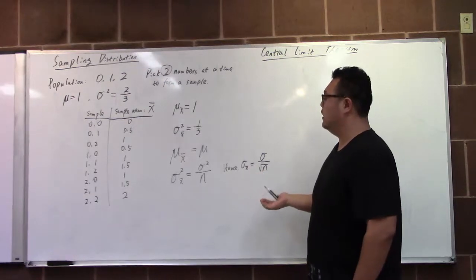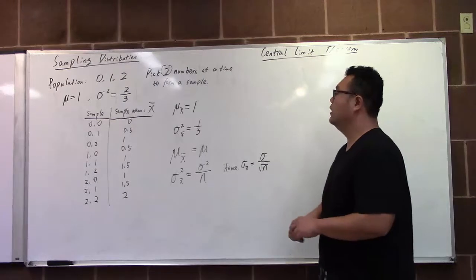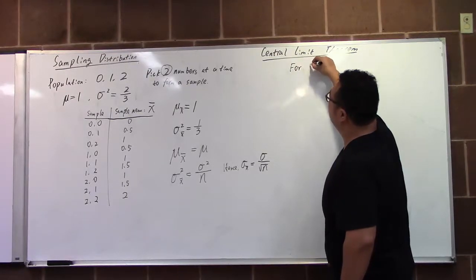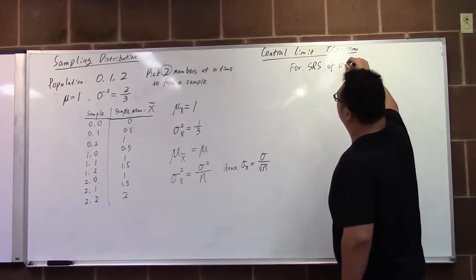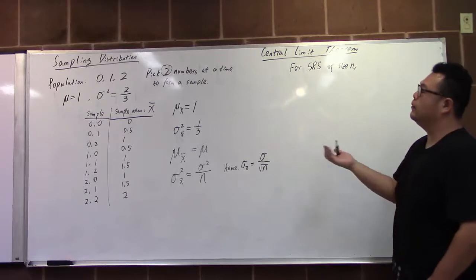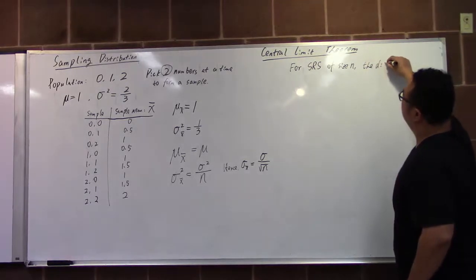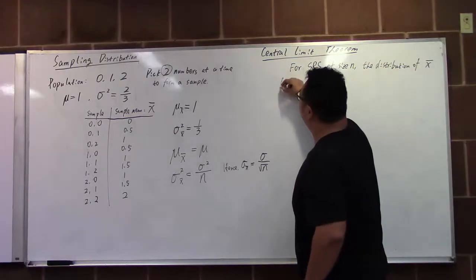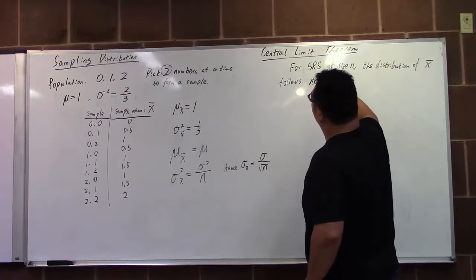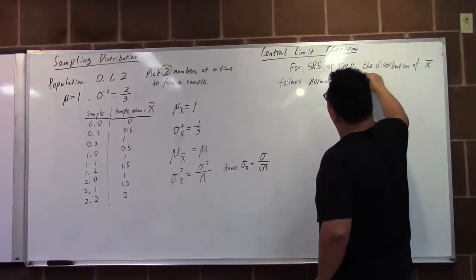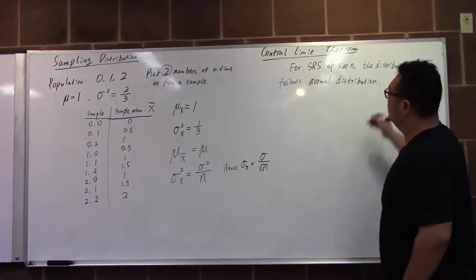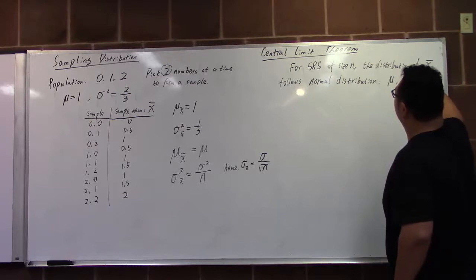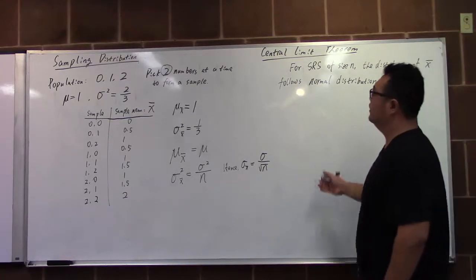By the square root of n as the standard deviation of the sample mean. Then the central limit theorem says that for simple random sample of size n, the sampling distribution of the sample mean follows normal distribution with mean equal to population mean and standard deviation which is from the sampling distribution of size n with some condition.